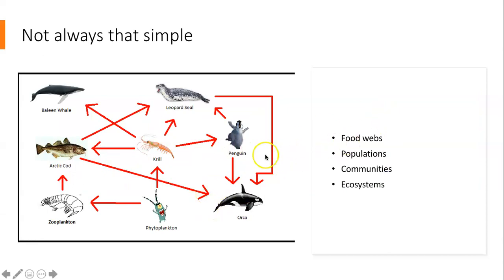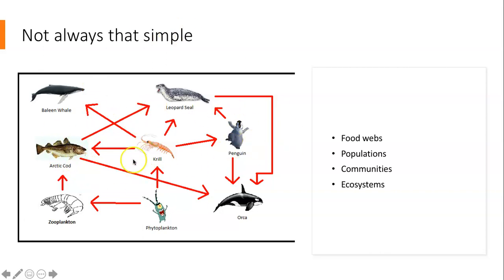This is what we call a food web. We look at food webs when examining populations of a single species, communities of many different species, and entire ecosystems. These lines show how energy is transferred from a primary producer to a primary consumer to secondary consumer and tertiary consumers. You can add many more organisms to this. It's not a one-to-one relationship anymore, so it's not always clear what would happen if you remove one organism — what happens to all the rest.